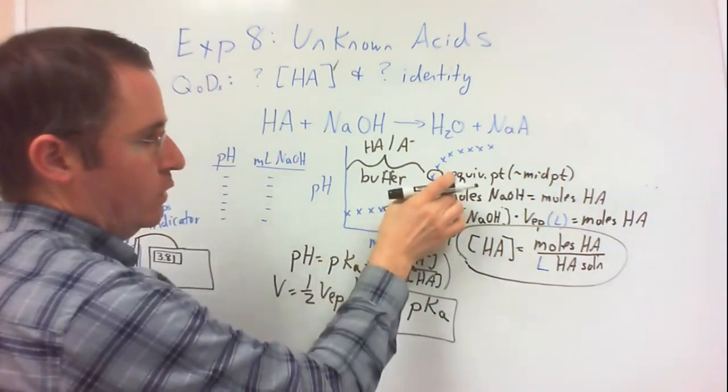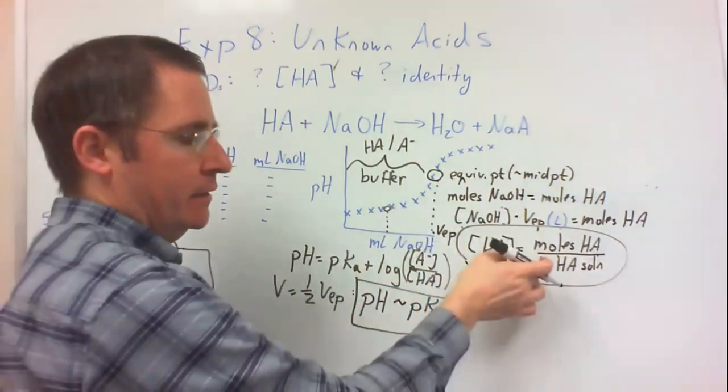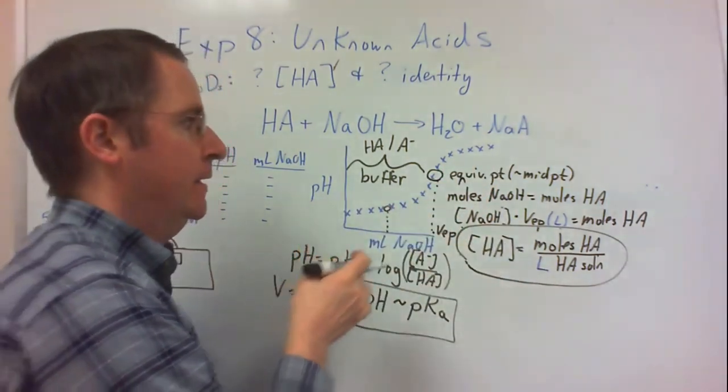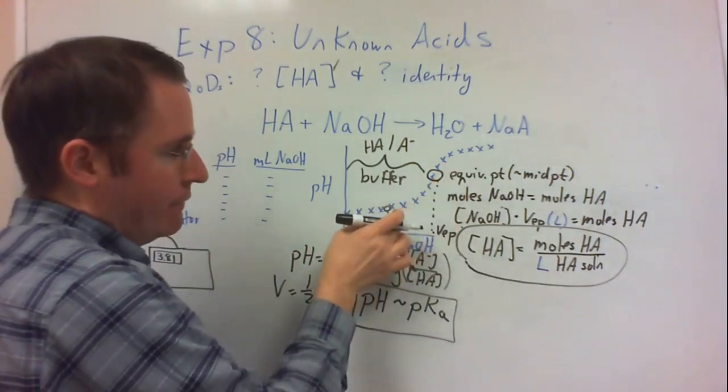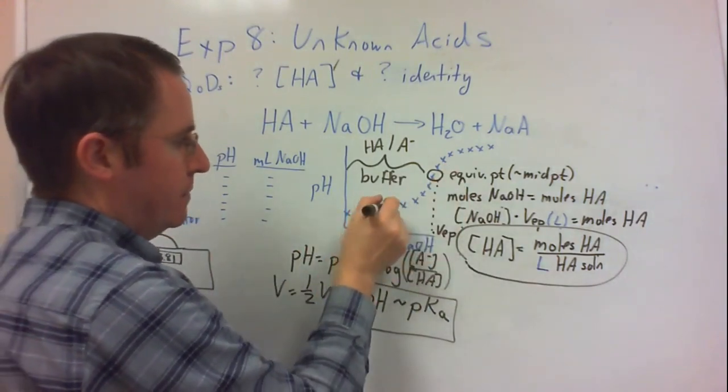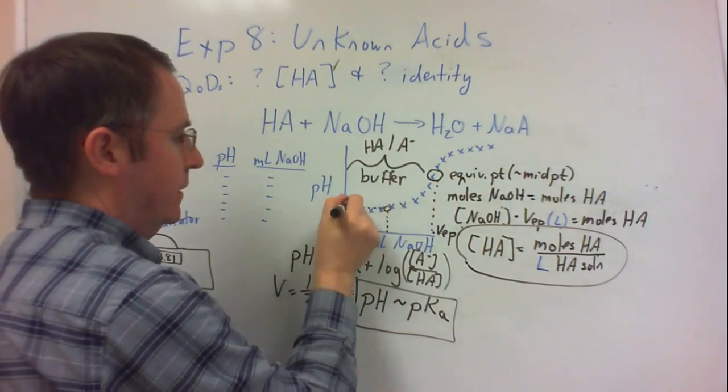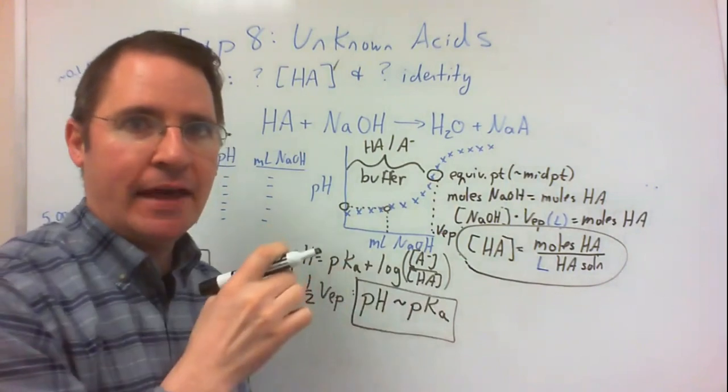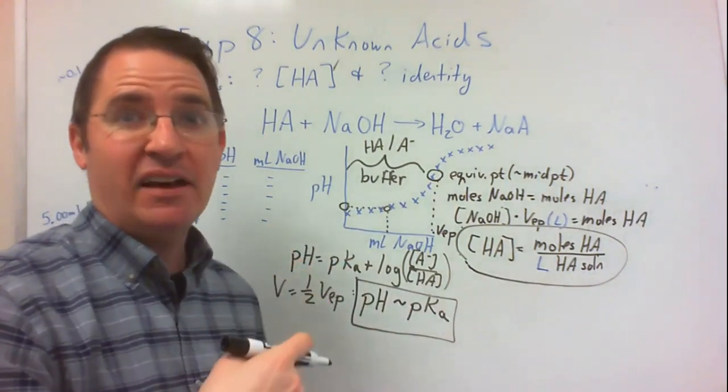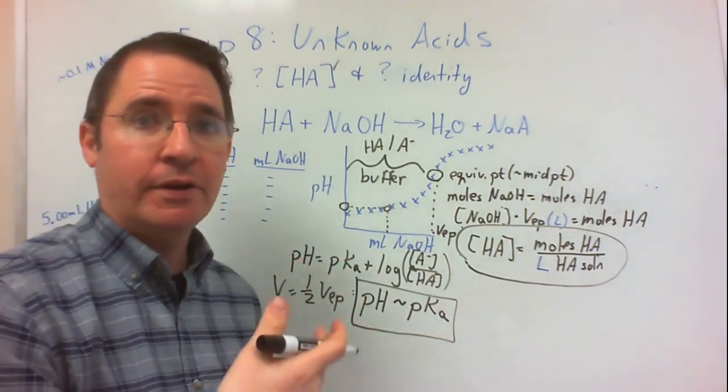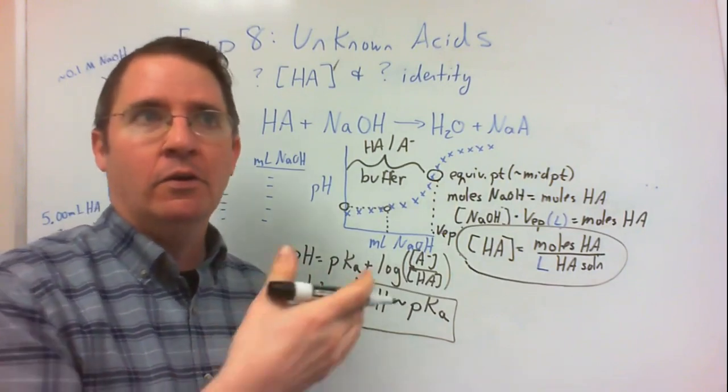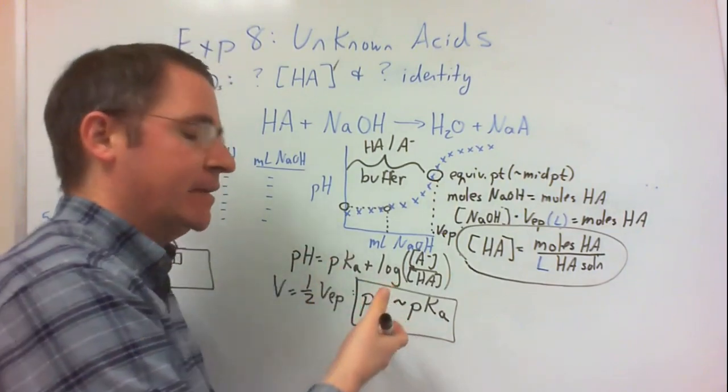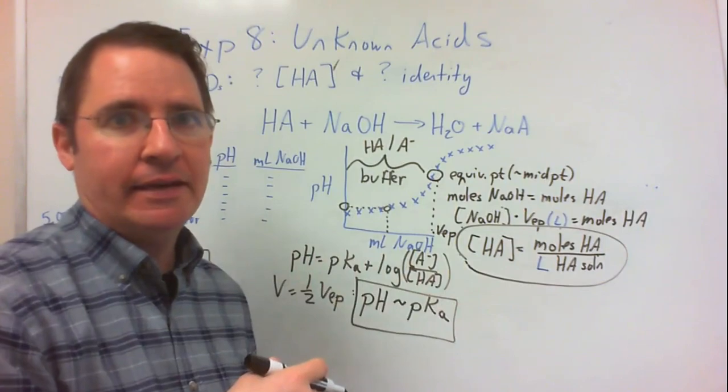So I'll find the equivalence point. From the equivalence point, be able to directly calculate the concentration of the weak acid. And then, at the halfway to the equivalence point, the pH at that point is then an estimate of the pKa of the weak acid. I'll compare this pKa value to the pKa values of the possible weak acids from pre-lab assignment. And whichever weak acid's pKa gives me the best match, I think it must be the identity of my weak acid.